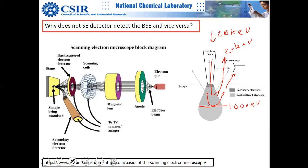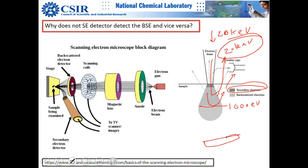Backscattered electrons can also generate secondary electrons. Those that escape the sample while maintaining the same energy are truly called backscattered electrons and have the highest amount of energy. Secondary electrons are those coming from the valence band or conduction band.